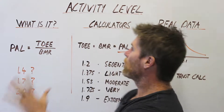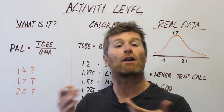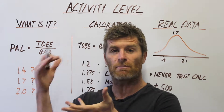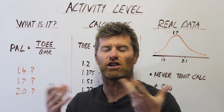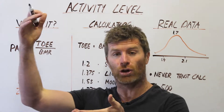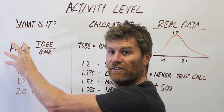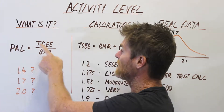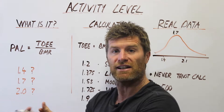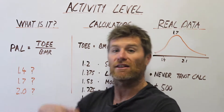So first up, we're going to talk about what activity level is. Basically, your activity level is just a multiplier — a number which compares your basal metabolic rate, your energy used at rest, compared to your total energy expenditure. Physical activity level is just basically your TDEE, your total daily energy expenditure, divided by your BMR.